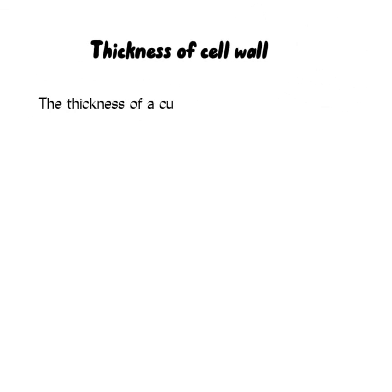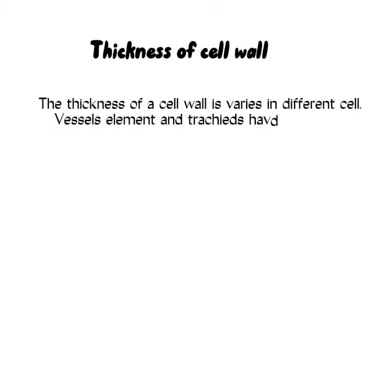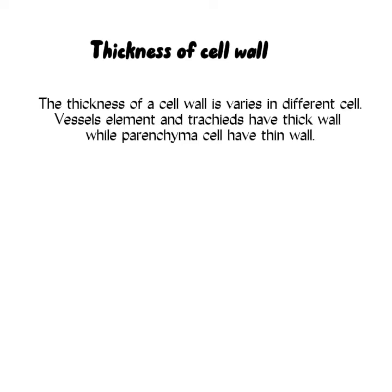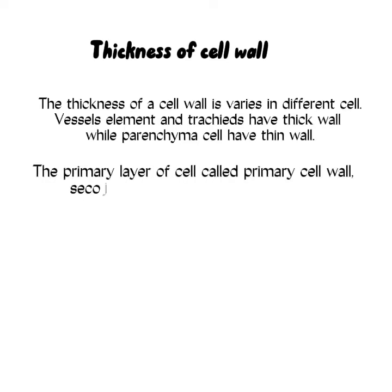Thickness of cell wall. The thickness of a cell wall varies in different cells. Vessel elements and tracheids have thick walls, while parenchymal cells have thin walls. The thickness of the cell wall is different in different cells. The primary layer of the cell wall is the primary layer, and the secondary cell wall comes after that.